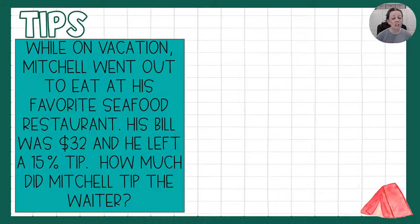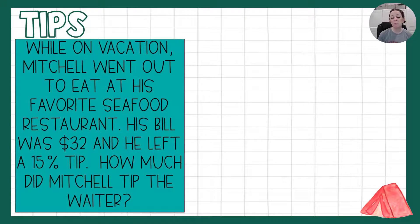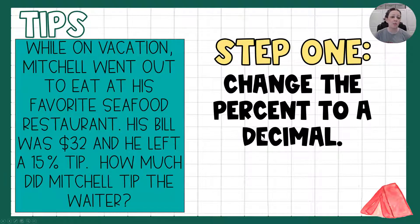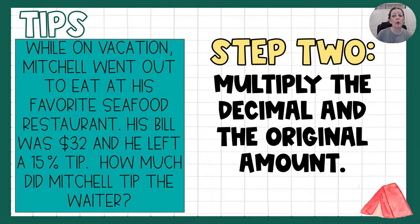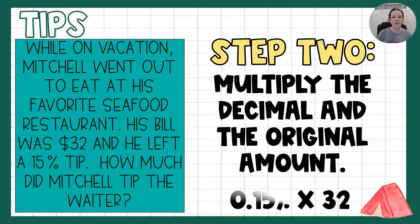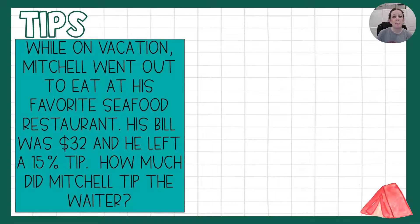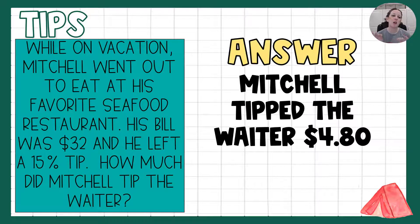Here's our first tip problem. While on vacation, Mitchell went out to eat at his favorite seafood restaurant. His bill was $32 and he left a 15% tip, which is average. How much did Mitchell tip the waiter? Step one: change 15% to a decimal — 0.15. Step two: multiply 0.15 by $32, which means Mitchell tipped the waiter $4.80.